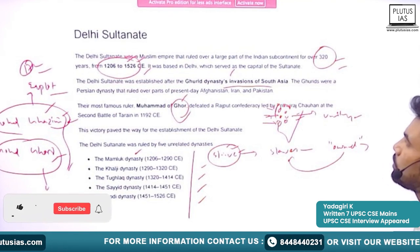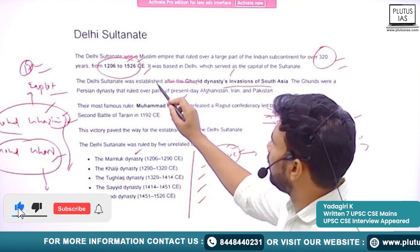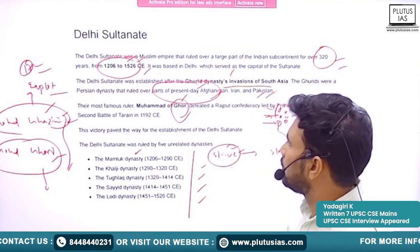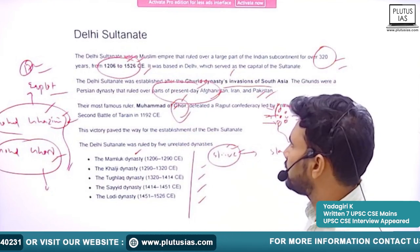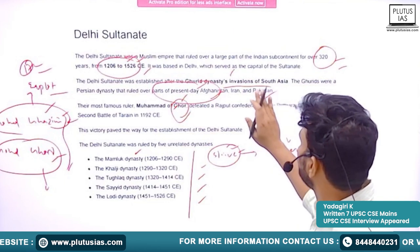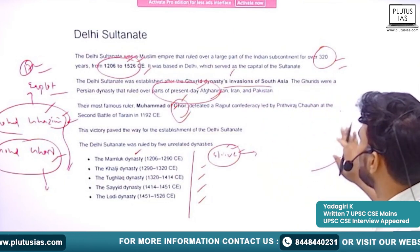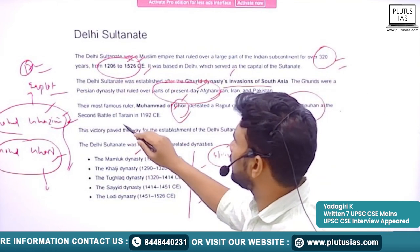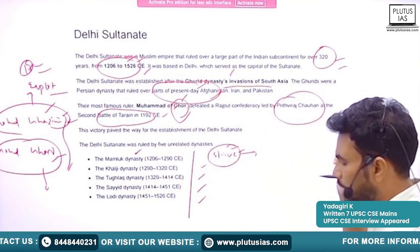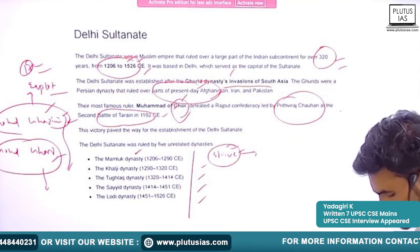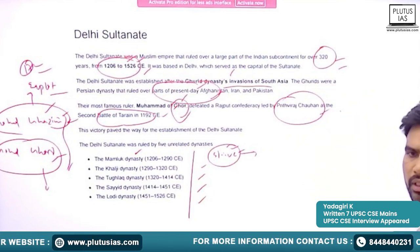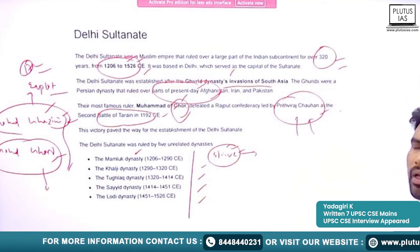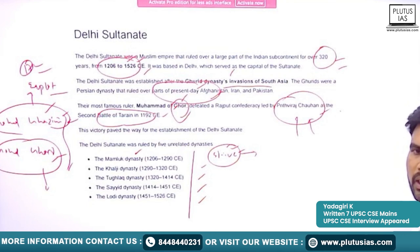In this region, especially the Rajputs were dominating in Rajputana, and many Rajput kingdoms were there. One of the reasons for the success of Muhammad Ghori into India is there was no unity among the Rajput kingdoms. Everything started with the Ghorid dynasty's invasions into South Asia. They used to rule over parts of present-day Afghanistan, Iran, and Pakistan.